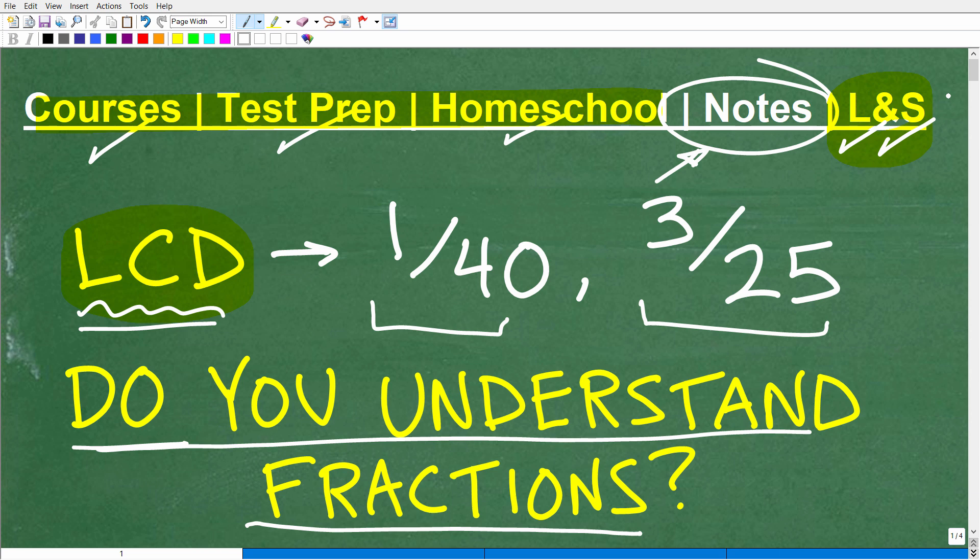Okay. So we want to find the lowest common denominator. We have 1/40th and 3/25ths. Now, why would we need the LCD in the first place? Let's just kind of ask that question. Well, anytime you're trying to add or subtract fractions, the denominators must be the same.